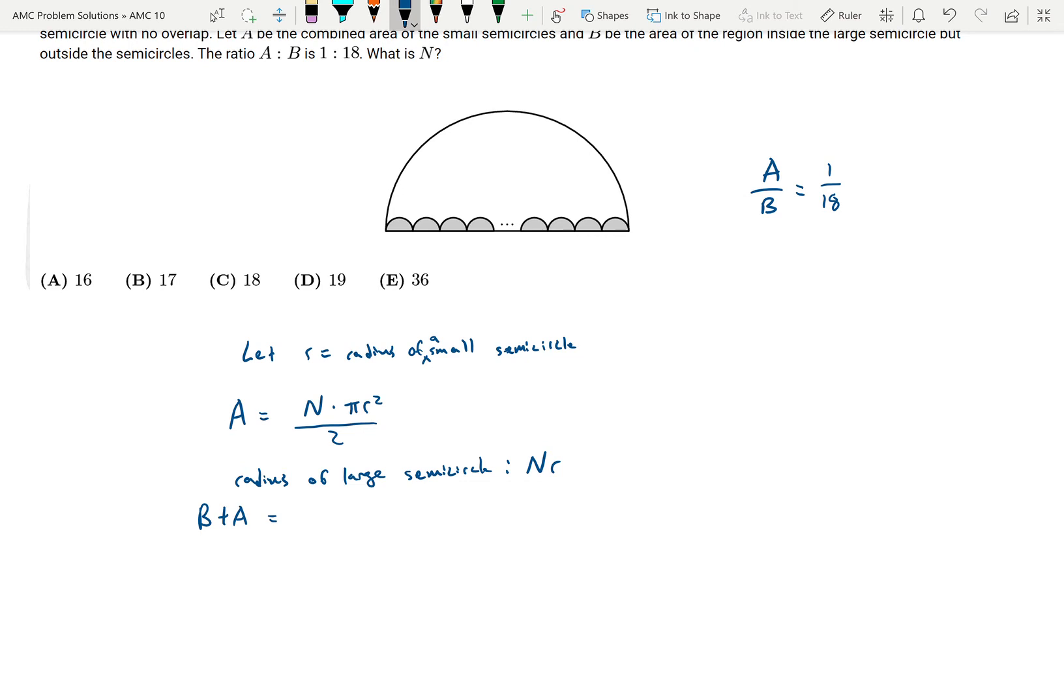So therefore we're going to have pi times that radius NR squared and then again divide it by 2 because it's a semicircle. So we get pi N squared R squared over 2.